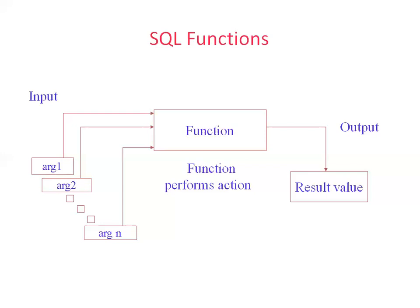A function always provides an output. The argument may not be mandatory depending on what it expects, and it can have multiple arguments. Rather than building complex logic on our own, database providers supply built-in functions so we can build logic easily. A function encapsulates core business logic — you don't need to implement it from scratch. For example, Oracle provides summation and concatenation functions.